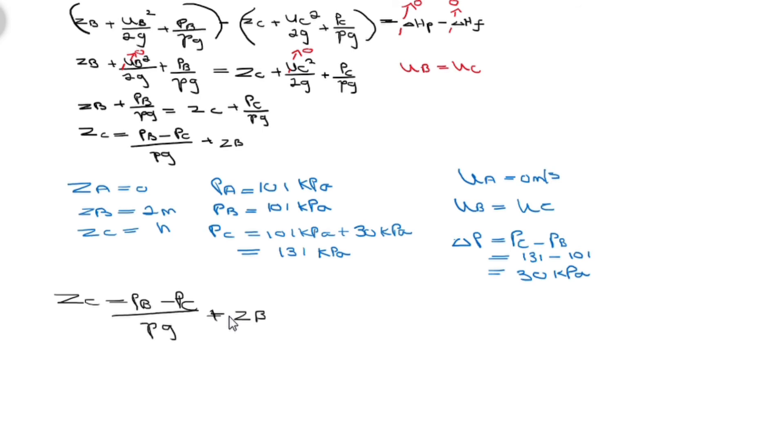Substituting we have 101 minus 131 over the density of water we are told it's a thousand kilograms per meter cubed. Multiply by the gravitational force it's 9.81, it's constant meters per second squared plus the height at point B it's 2 meters.